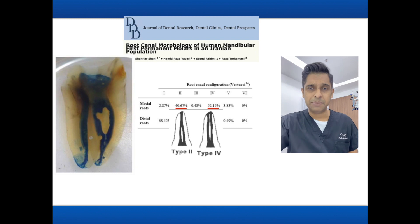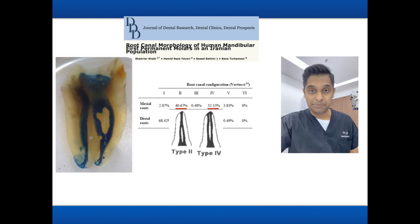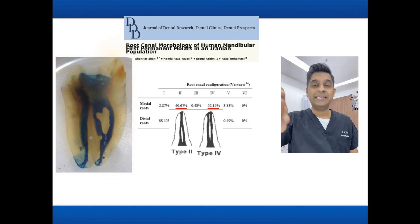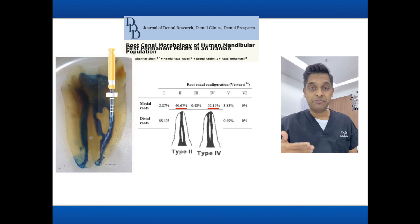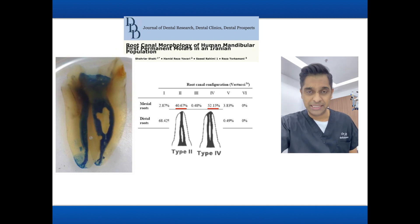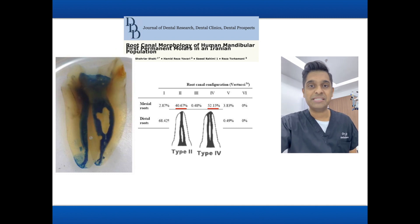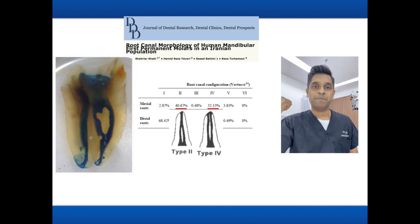When shaping the mesial buccal canal to the apex, the file takes multiple curvatures. If you're not careful in the initial stages, there is a real possibility of causing file separation due to cyclic fatigue.